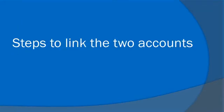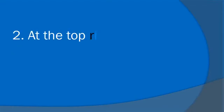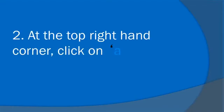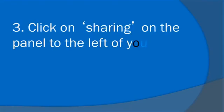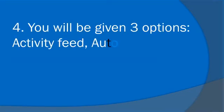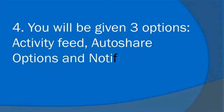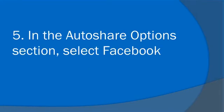Steps to link your two accounts. Sign in to your local business YouTube account. At the top right-hand corner, click on Account. Click on Sharing on the panel to the left of your screen. You'll be given three options: Activity Feed, Auto-Share Options, and Notifications. In the Auto-Share Options section, select Facebook.